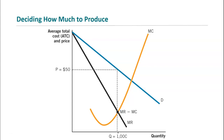A monopolist can affect the price of their product by changing the level of output they produce. But the actual price they charge is always dictated by the demand side of the market — what are people willing to pay for my product, given the amount that I produce? A monopolist faces a downward sloping demand curve, and every time they change their level of output, it changes what people are willing to pay.